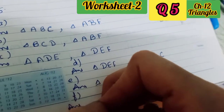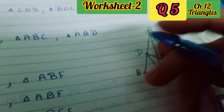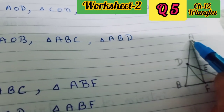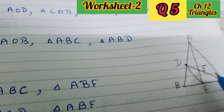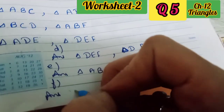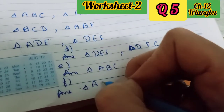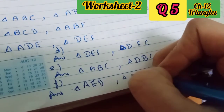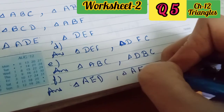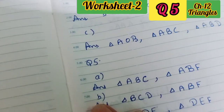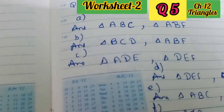In the last part, AE as one side — here AE. Then triangle AED — this is one triangle. Triangle AEC — this is one triangle. Now with AE as a side, we will write triangle AED and triangle AEC. So just complete your worksheet 2 of chapter 12.